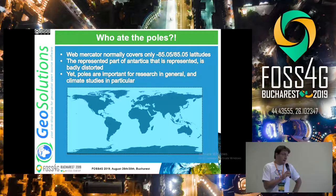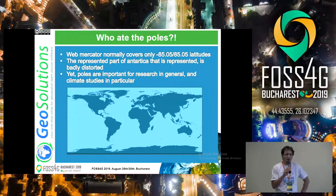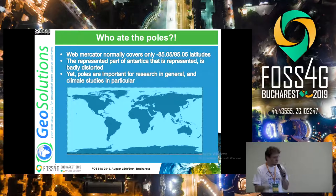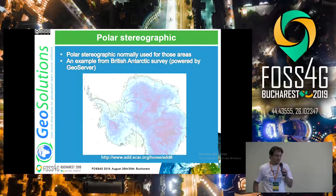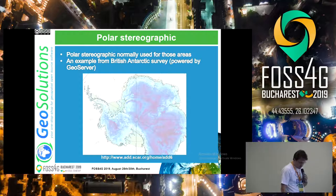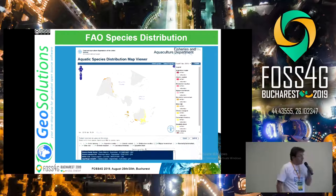Another problem with web Mercator is that it never includes the pole. Sometimes it includes Antarctica, but it looks so bad that people just strip it away. The poles are kind of important in this age and time — anyone worried about climate change? The poles are where the action is. For that, there are polar stereographic projections — one example from the northern pole, and another from FAO showing species distribution using a south polar projection.